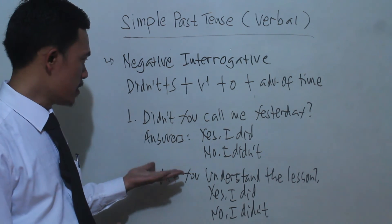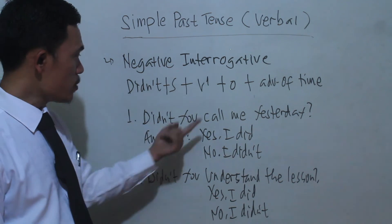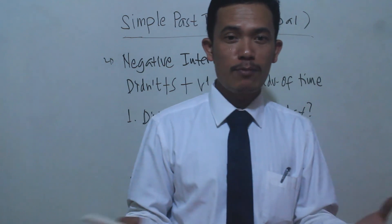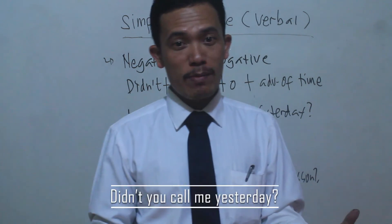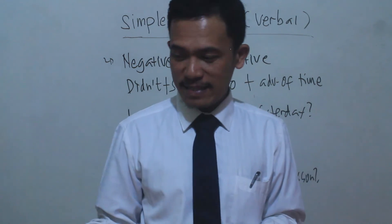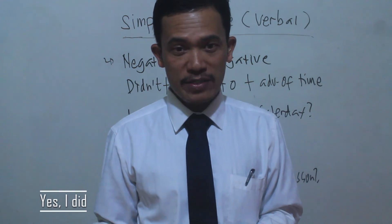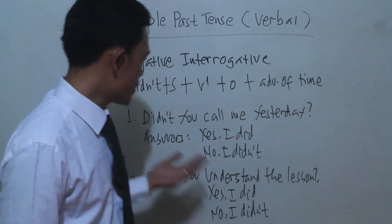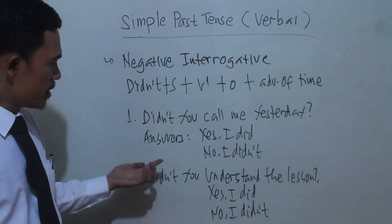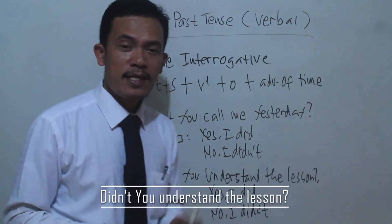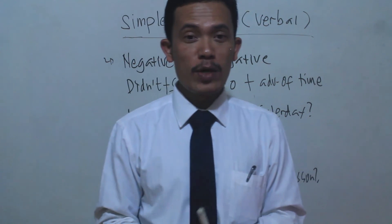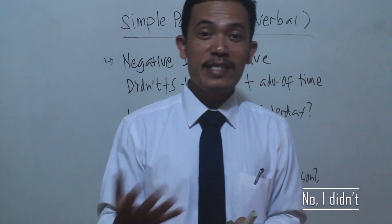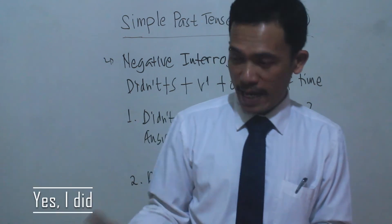Examples of negative interrogative: 'Didn't you call me yesterday?' You can answer: 'Yes, I did' (positive) or 'No, I didn't' (negative). Next: 'Didn't you understand the lesson?' When you answer in negative, you say 'No, I didn't.' When you answer in positive, you say 'Yes, I did.'